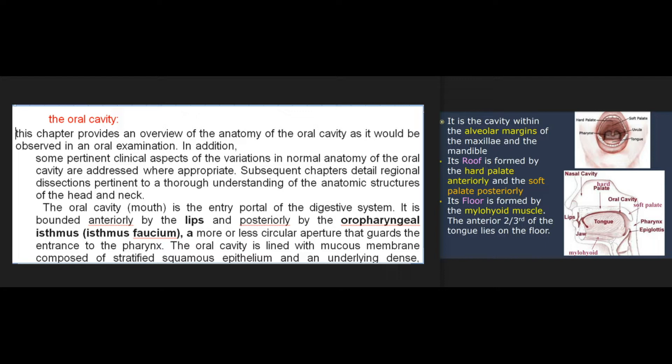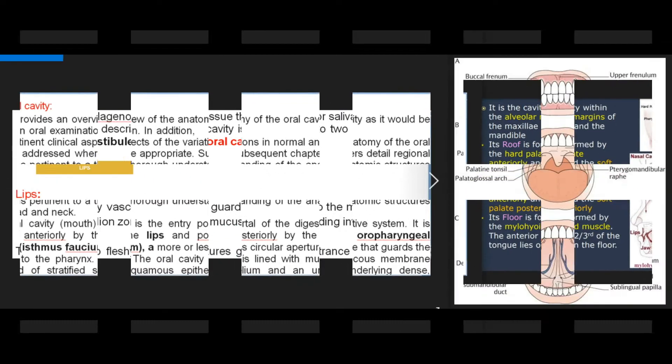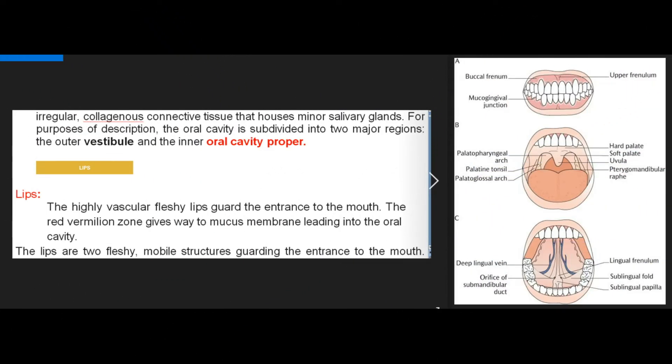The oral cavity (mouth) is the entry portal of the digestive system. It is bounded anteriorly by the lips and posteriorly by the oropharyngeal isthmus (isthmus faucium), a more or less circular aperture that guards the entrance to the pharynx. The oral cavity is lined with mucous membrane composed of stratified squamous epithelium and an underlying dense irregular collagenous connective tissue that houses minor salivary glands.